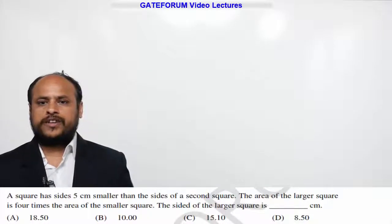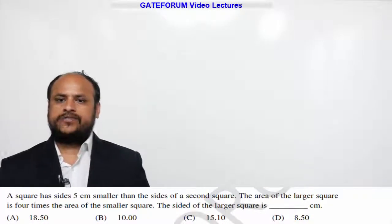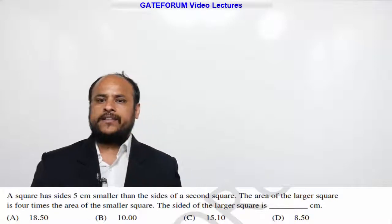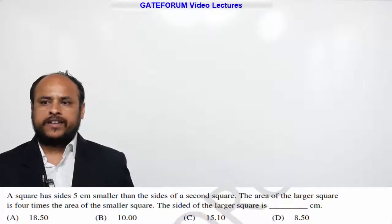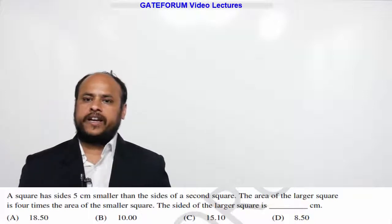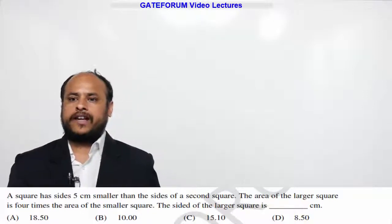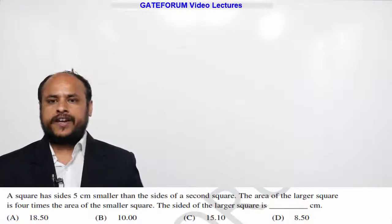This question belongs to Civil Set 1. The question is: A square has sides 5 centimeters smaller than the sides of a second square. The area of the larger square is 4 times the area of the smaller square. The side of the larger square is dash centimeters.